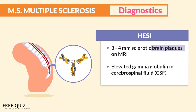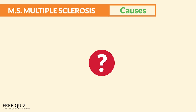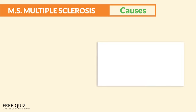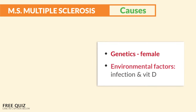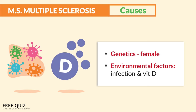We can also do a lumbar spinal puncture, also called a spinal tap, where we see high levels of antibodies — meaning the body's own immune system is attacking itself. Elevated gamma globulin in cerebral spinal fluid from the lumbar puncture — fancy words for antibodies are present. Specific causes are unknown, but it's linked to genetics like female sex, as well as environmental factors like infection and vitamin D deficiency.